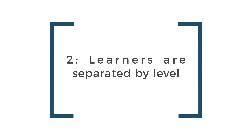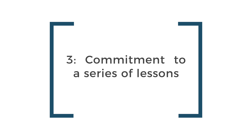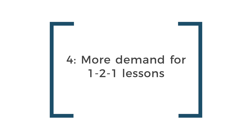Secondly, most teachers want to keep learners separated by levels. If your lessons are for intermediate learners, this excludes all beginners and advanced students. Thirdly, learners will have to commit to a series of lessons — perhaps a semester or a ten-week period — and that type of commitment might not be attractive to a lot of learners. Finally, a lot of learners who want lessons online are looking for that one-to-one practice; they want to have the teacher all to themselves. Those four reasons outline why the demand for group lessons is lower than for one-to-one lessons.